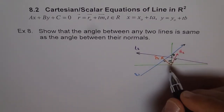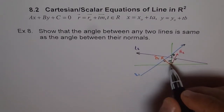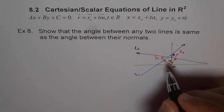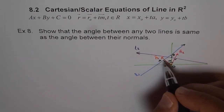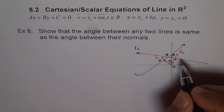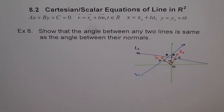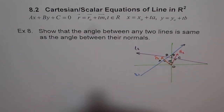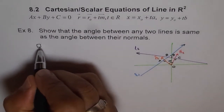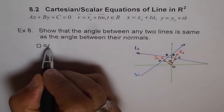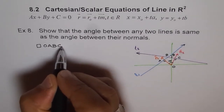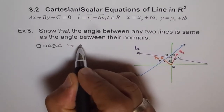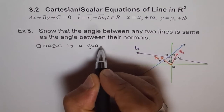Now let's consider where the normals cut the lines and label the points. This is our origin O. This point is A, this point is B, and this point is C. So O, A, B, C form a quadrilateral.